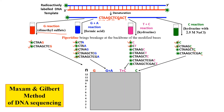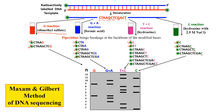We then subject all these fragments to agarose gel electrophoresis, where they separate according to their size. A fragment of one base pair moves the furthest ahead, followed by two base pairs, then three base pairs, and so on. You can see the different band patterns according to size. From here we can read our sequence: at the first position (one base pair), we have two fragments — one from the T+C reaction and one from the C reaction, both corresponding to C.